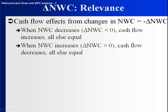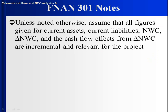We can measure net working capital at specific points in time and we know how to get the change. To get the cash flow effect — which is what we're really interested in — we simply take the opposite of it. When net working capital goes down, the change is negative and cash flows increase. When net working capital goes up, the cash flow is negative. Unless told otherwise in problems, assume that figures given for current assets, current liabilities, net working capital, the change, and the cash flow effects are incremental and relevant for the project — so you can work with them without questioning whether they're incremental.